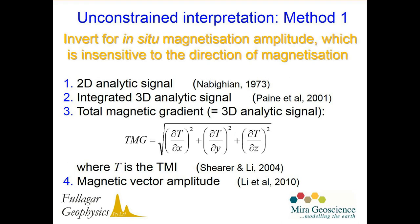In terms of unconstrained approaches, the idea is normally to invert for some quantity which is insensitive to direction of magnetisation. The analytic signal has been nominated as one such quantity — it has the property of being fairly insensitive to the actual orientation of the magnetisation, sensitive to magnitude but not orientation. We can then invert for magnetisation strength or amplitude in our volume instead of inverting for susceptibility as we normally do. Another quantity is the magnitude of the magnetic anomaly vector, which Yadwali and his students demonstrated is probably an even better quantity to invert than the 3D analytic signal.